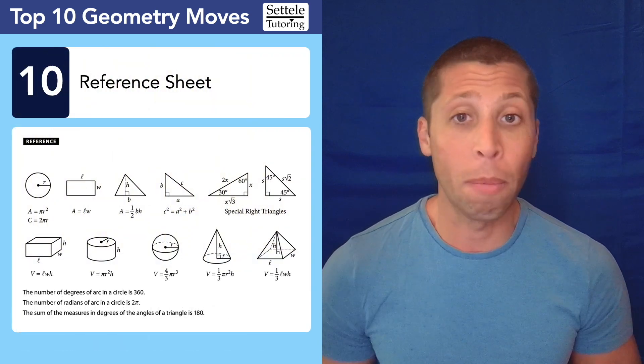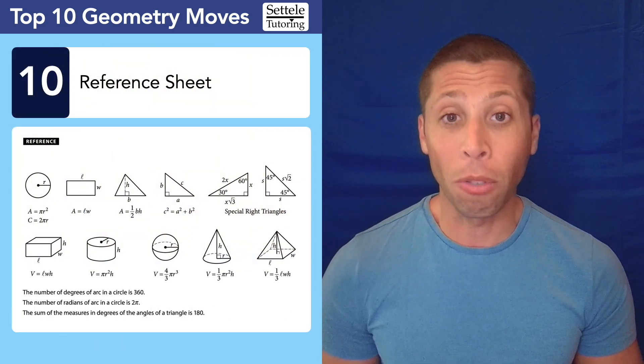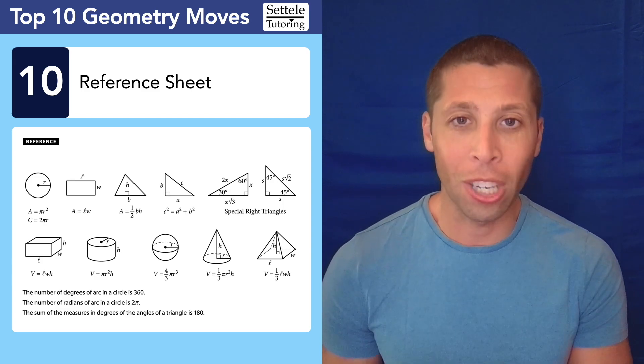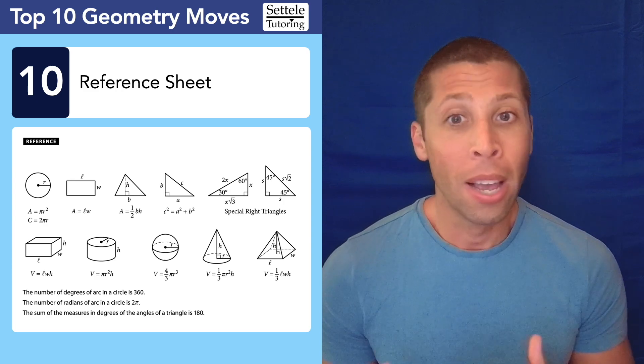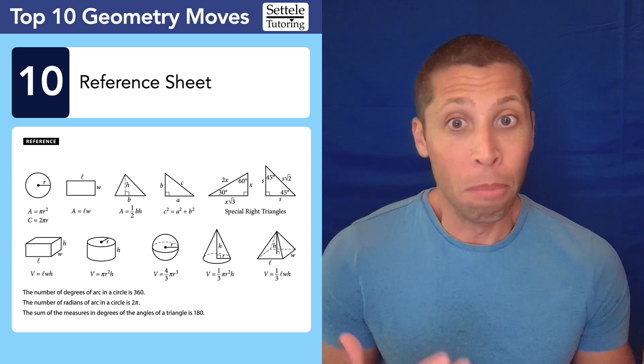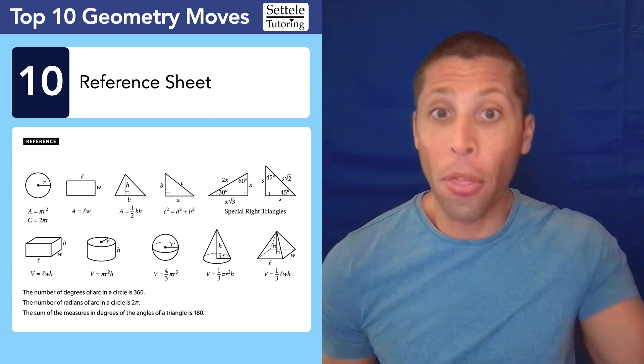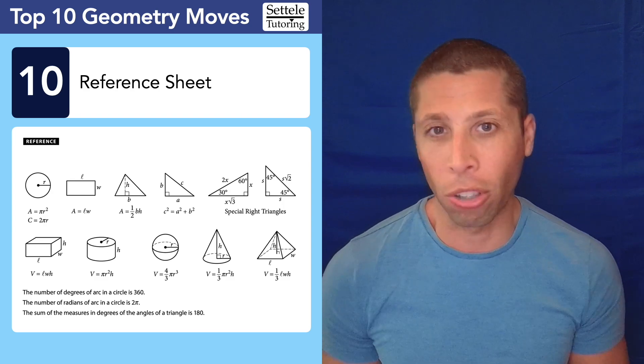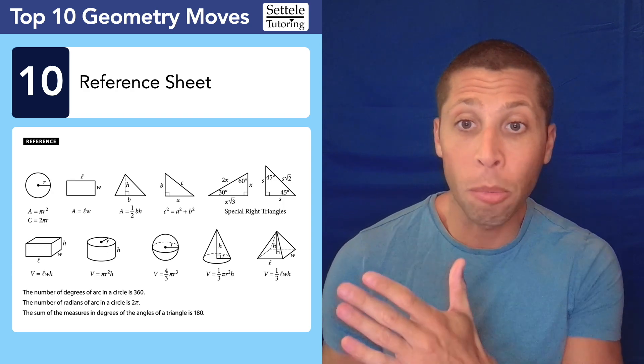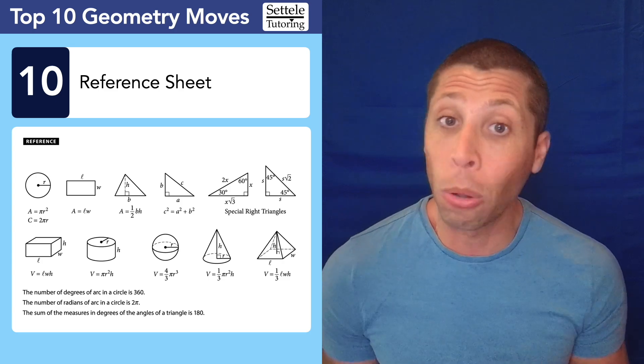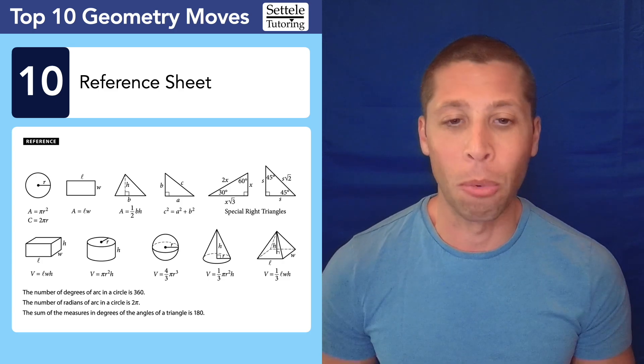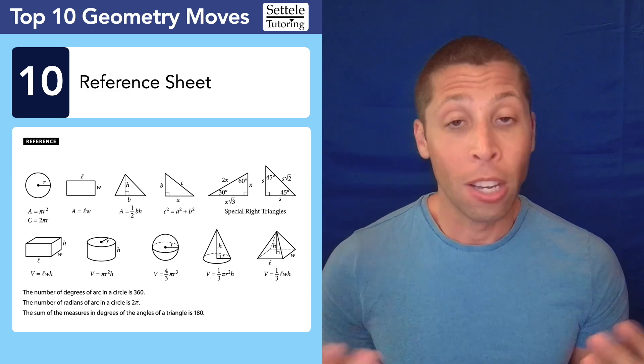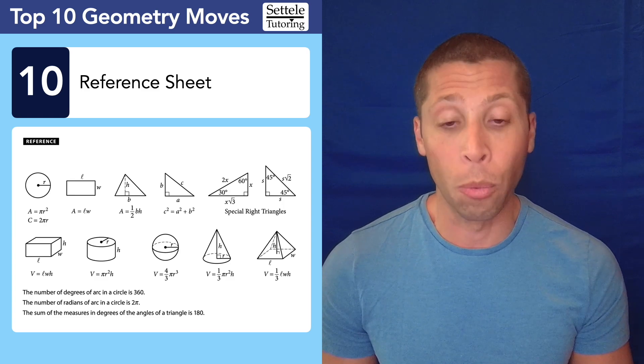So let's start with number 10. This one might seem obvious to many of you, but I see it often overlooked. Remember, the SAT provides you with most of the geometry formulas in the reference sheet that's in the Blue Book app. So anytime you have a hard geometry question and you're stumped, open the thing up and look at the formulas and see if anything rings a bell or looks familiar to the picture that you're given. So it could be about volume. We've got all those formulas. Do not forget that this exists. And if you're stuck, open it up for inspiration.